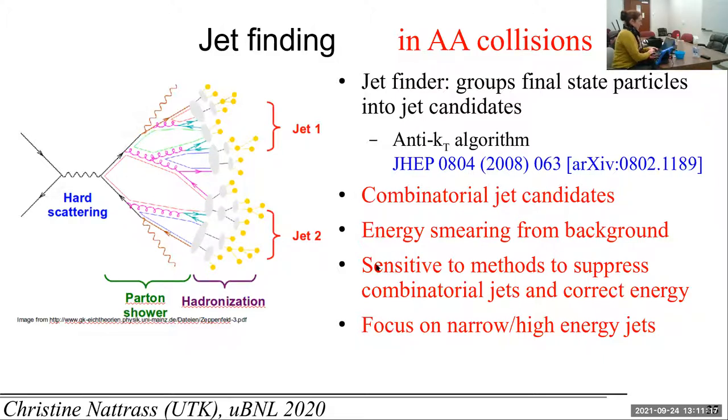So you have to correct for it or you can correct for it. We do a lot of tricks that suppress, but I'm not going to talk too much about, but they suppress these combinatorial jets and make it easier to correct the jet energy and subtract the combinatorial jets. But what we're doing is always to focus on small jets and very high energy jets. So this already kind of messy definition gets a lot messier.